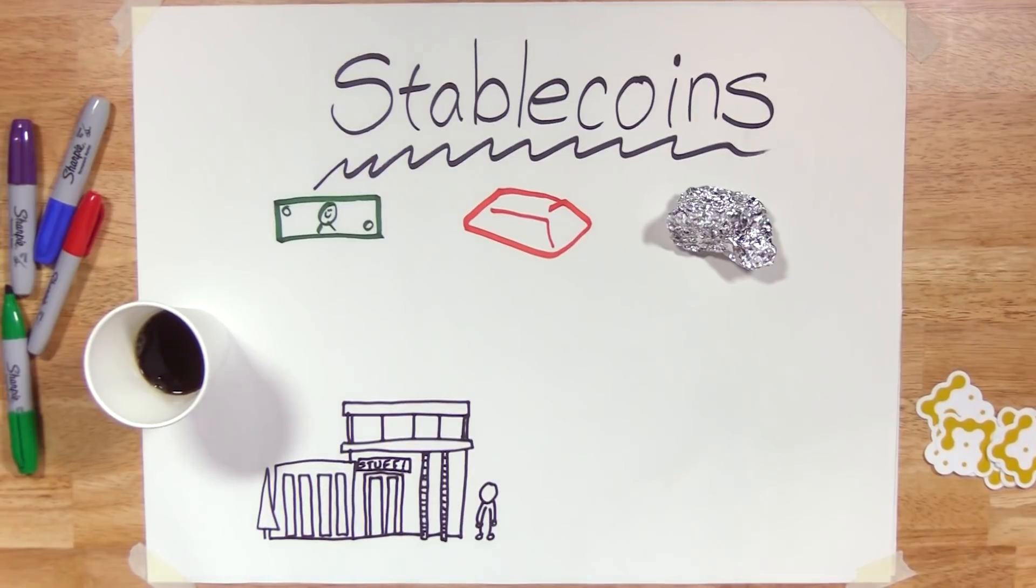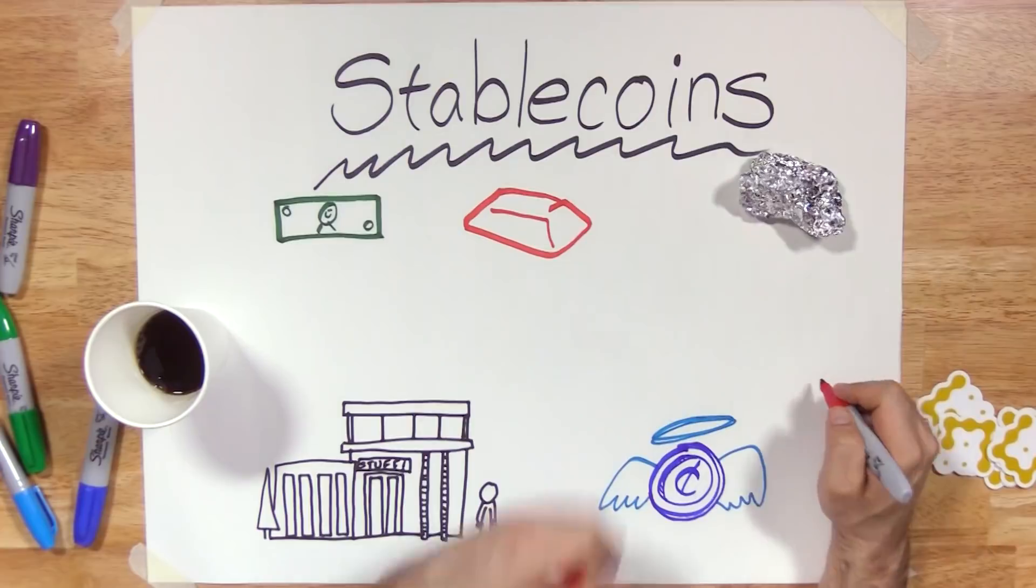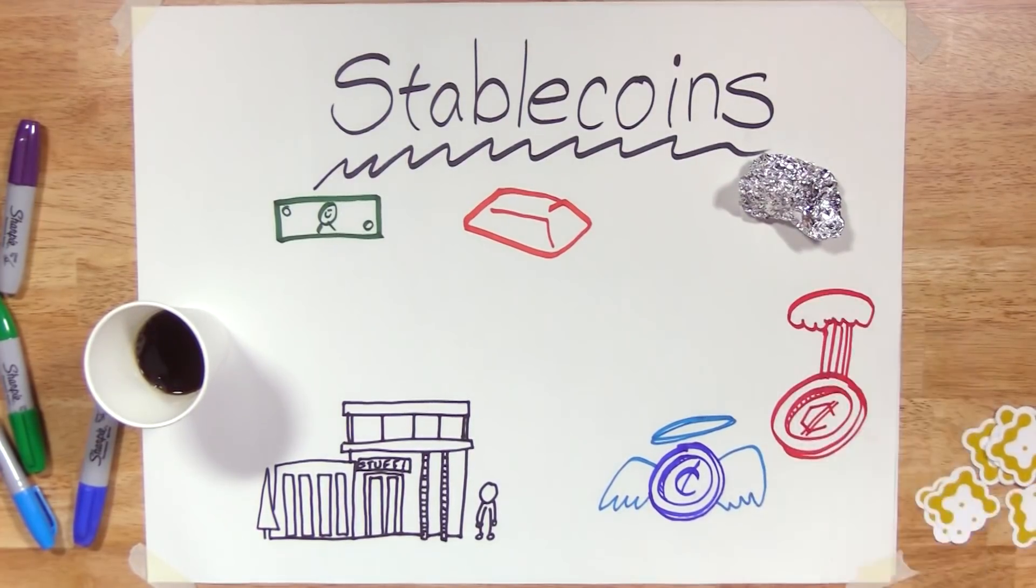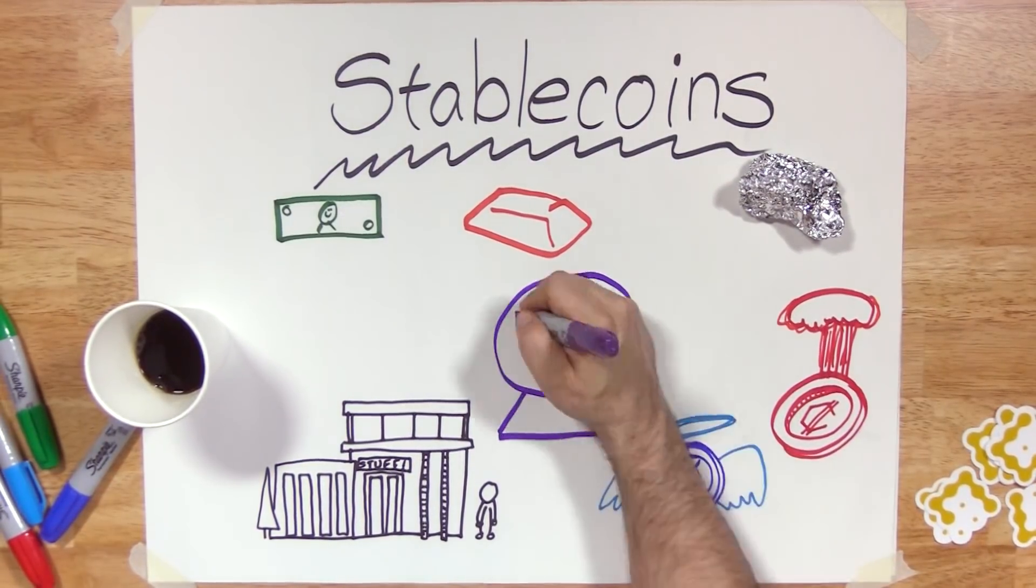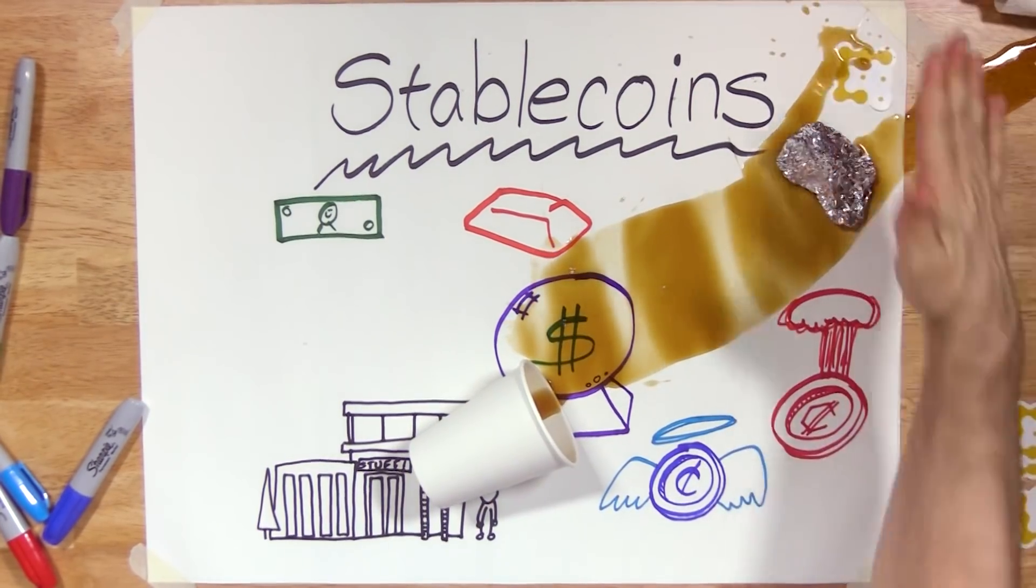The benefits to a business that a stable token could provide are great. A stablecoin makes finance far easier than a volatile coin. Since the price is predictable, budgeting becomes less of a headache. But in practice, this is a tough solution to make work.